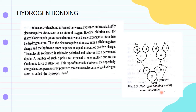Consider the example of hydrogen bonding among water molecules. We have one H₂O molecule, where oxygen and hydrogen form a covalent bond. Oxygen and hydrogen share an electron pair equally with each other. Similarly, hydrogen and oxygen pair equally with each other.